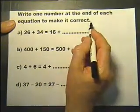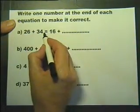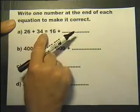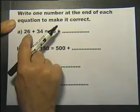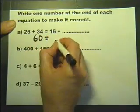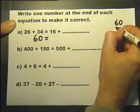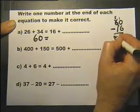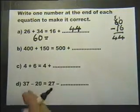Write one number at the end of each equation to make it correct. This is an equation—anything with an equal sign is an equation. I've got to write one number there that makes the left hand side equal to the right hand side. Let's start by adding these two together. 26 and 34 is 60. So 16 adds something is 60. We need to do 60 take away 16, which is 44.